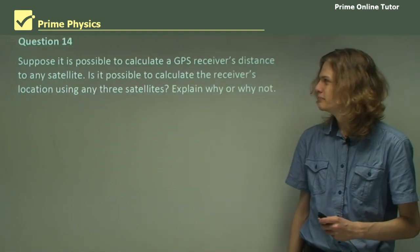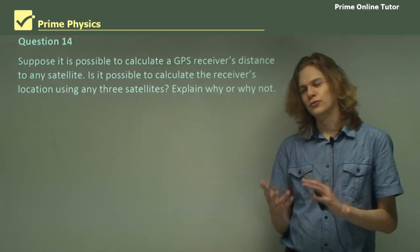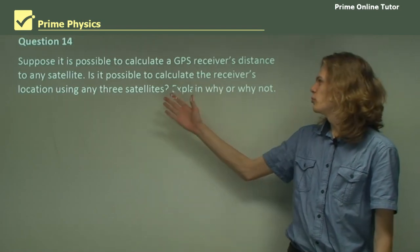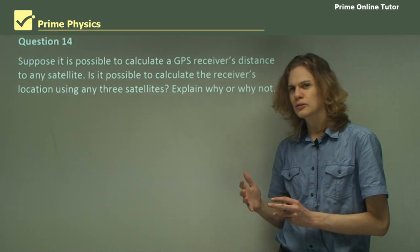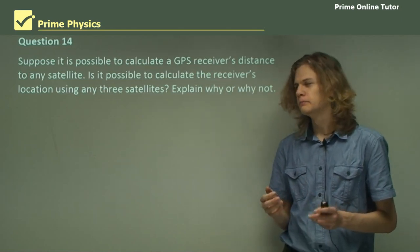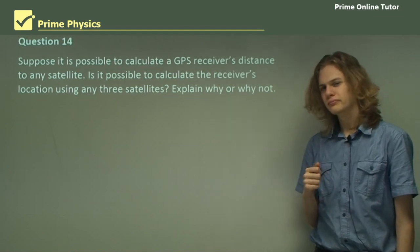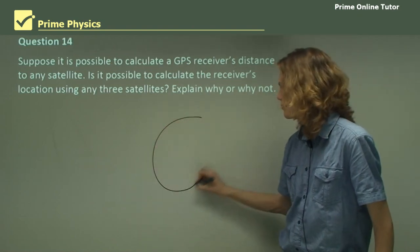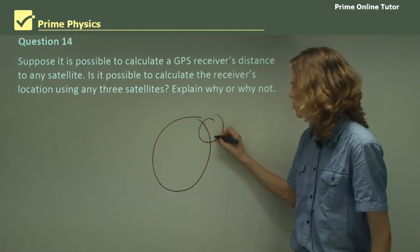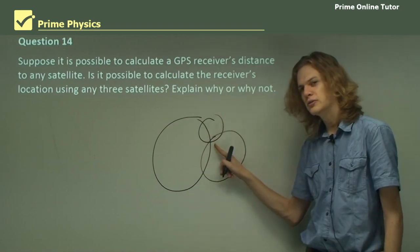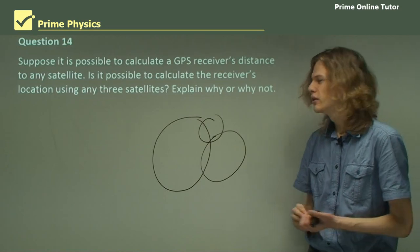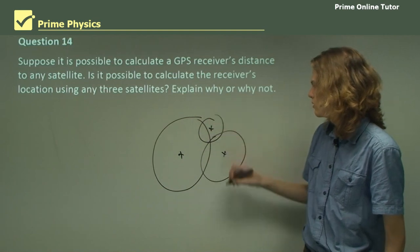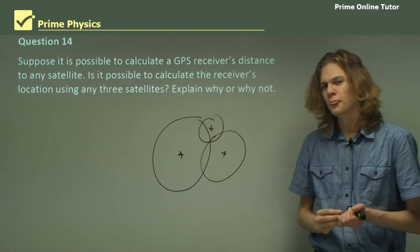Question 14. Suppose it's possible to use any sort of satellites to calculate a position. Is it possible to calculate the receiver's location using any three satellites, if we can look at any satellite in the sky at all? And explain why or why not. Now, I mentioned before that if we have three circles, and they all overlap at a common point, then we know that that point must be where the GPS receiver is. So it looks like as long as we have three satellites of any distance from us, we should be able to tell where we are. But that's not quite true.